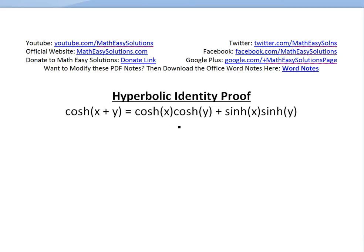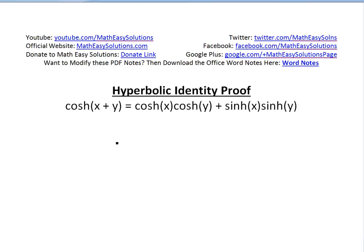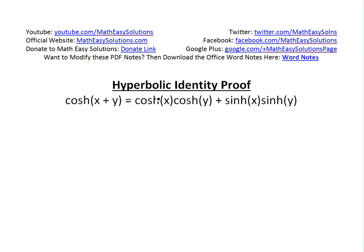Hi, it's time for another Math Easy Solution to discuss another hyperbolic trigonometry identity proof. Look at this identity: cosh, or hyperbolic cosine, of x plus y equals cosh x times cosh y plus sinh, or hyperbolic sine, of x times sinh y. You can see more on hyperbolic functions in the video links below if you aren't too familiar with them. Anyway, the proof for this one is pretty straightforward.